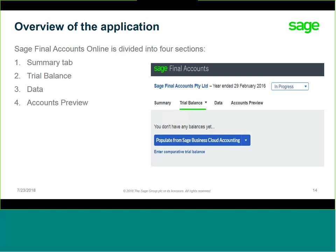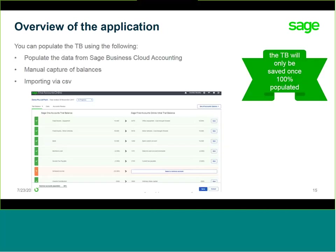Once you are in the application, you will see four tabs: the Summary tab, the Trial Balance, the Data tab, and Accounts Preview. On your trial balance, you can capture your account balances either via import from Sage Business Cloud Accounting, manually, or via CSV. Once you have imported these amounts, you'll be required to map these balances to the accounts in Sage Final Accounts Online.